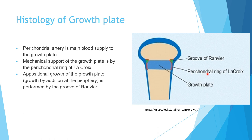The main blood supply of the growth plate comes from the perichondrial artery. The mechanical support of the growth plate comes from the perichondrial ring of LaCroix. Appositional growth — growth at the periphery — is performed by the groove of Ranvier.